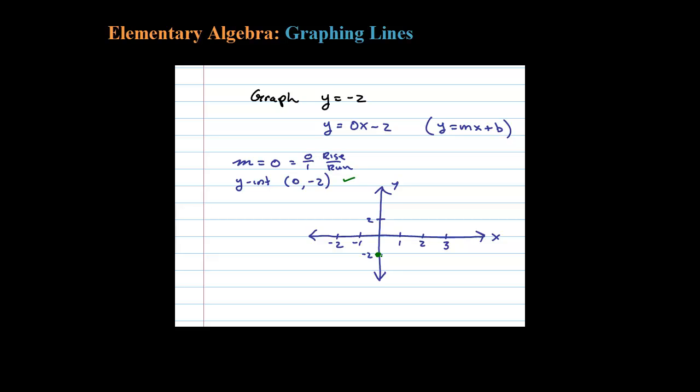But let's look at it anyways. If we rise 0 and run 1, so 0 up and down and run one unit, we get another point on the graph 1 comma negative 2. Rise 0 and run 1, so you could see here we get the horizontal line passing through 0 negative 2.